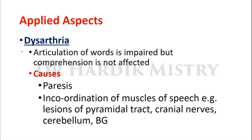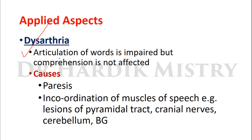Applied aspect — first, dysarthria. In this abnormality, the articulation of words is impaired but comprehension is not affected. The motor aspect of speech is damaged but the sensory aspect is not. Causes include paresis or weakness and incoordination of muscles of speech, for example lesions of the pyramidal tract, cranial nerves, cerebellum, or basal ganglia.